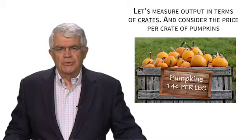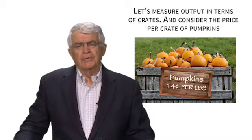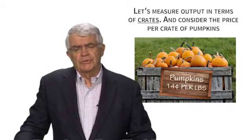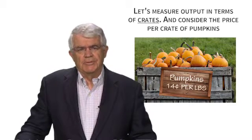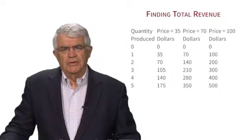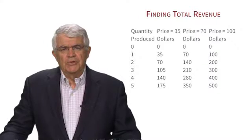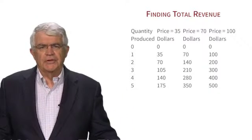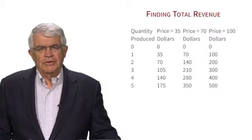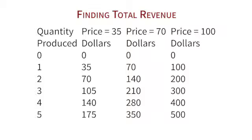Given that assumption, let's think about the decision of how much to produce at this farm. The decision is how many crates of pumpkins to produce. In the table, the number of crates produced is in the first column: one, two, three, four, five.